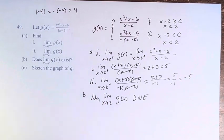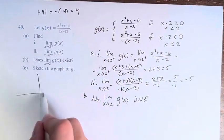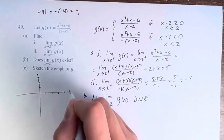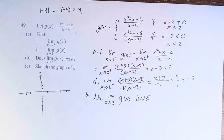So sketch the graph of g. Well, we have two lines here, basically. When we are greater than 2, then we have x plus 3.